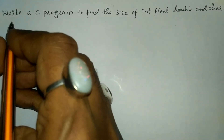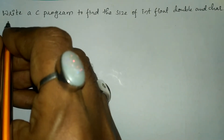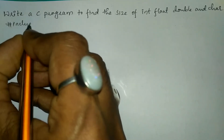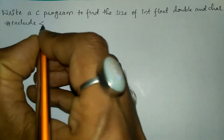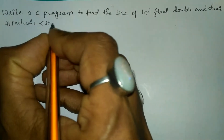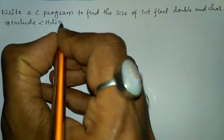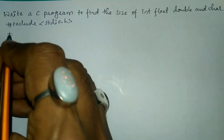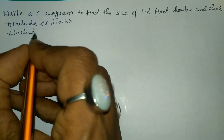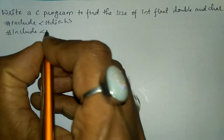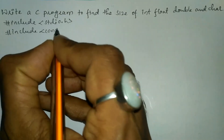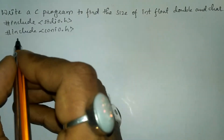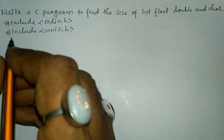Let us write the preprocessor directives: hash include in angular braces we will write standard input output dot h header file. The next preprocessor directive is hash include in angular braces we will write console input output dot h header file.